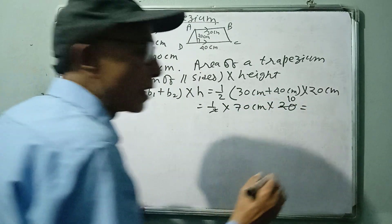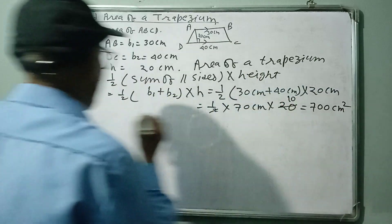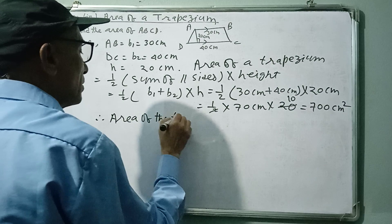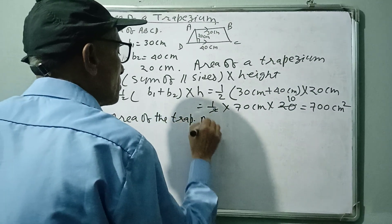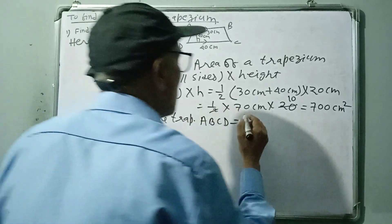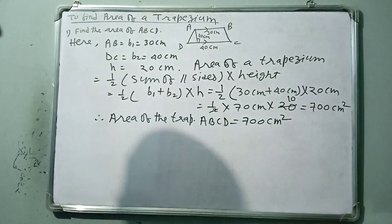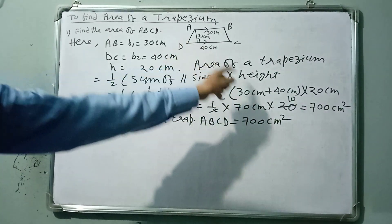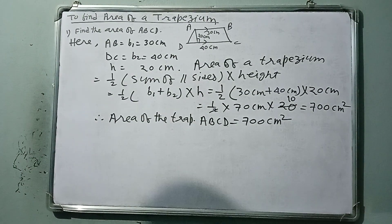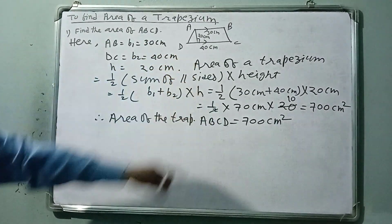So 70 × 10 = 700. Therefore, the area of trapezium ABCD = 700 cm². The formula is: half into sum of parallel sides into height. This is the formula to find the area of a trapezium.